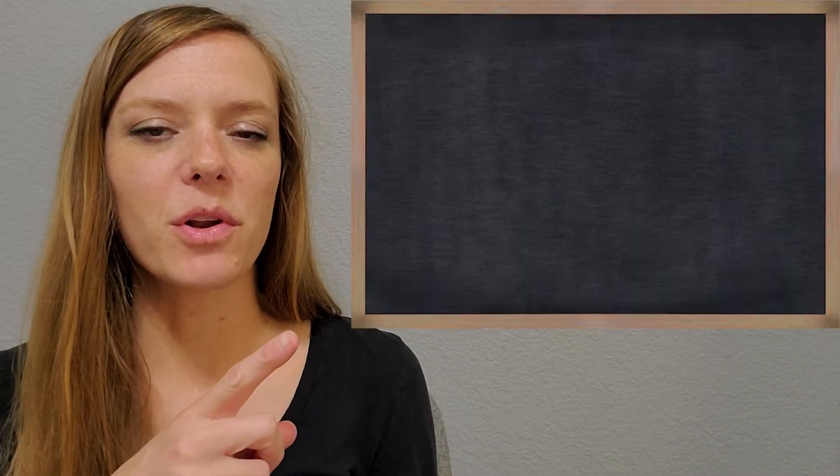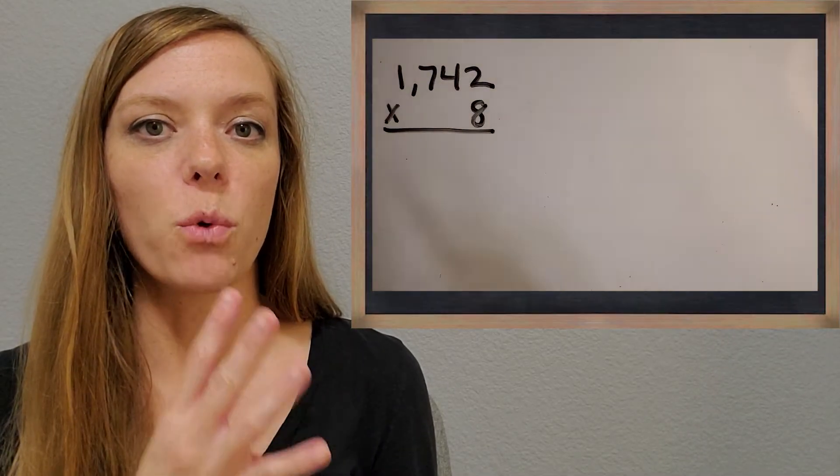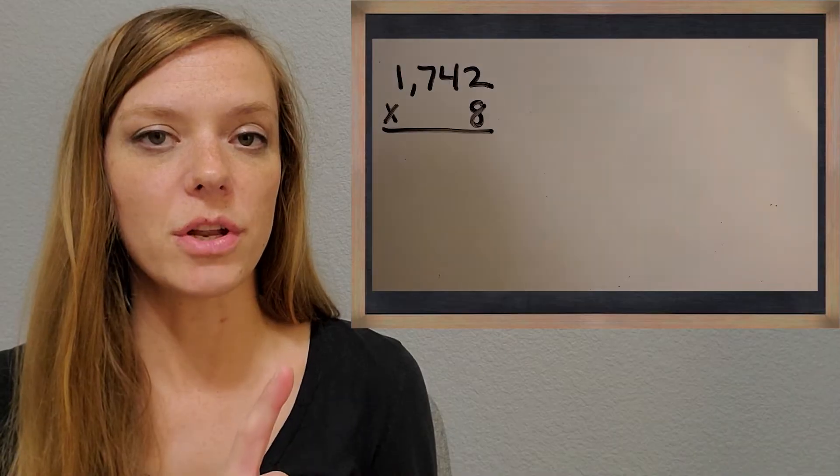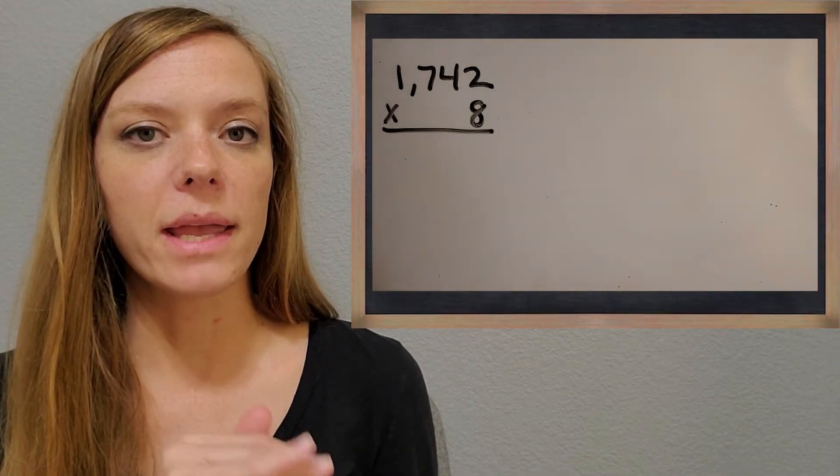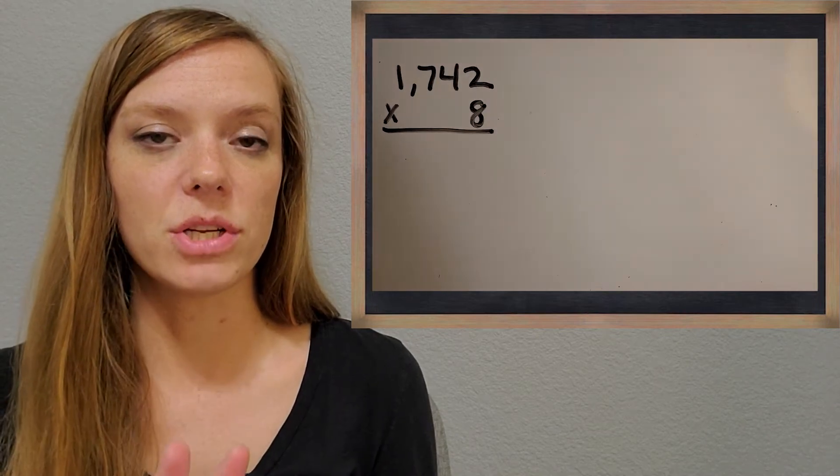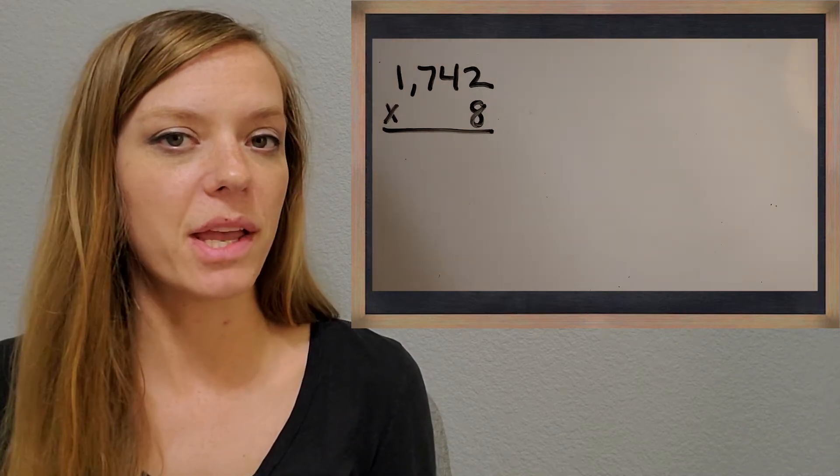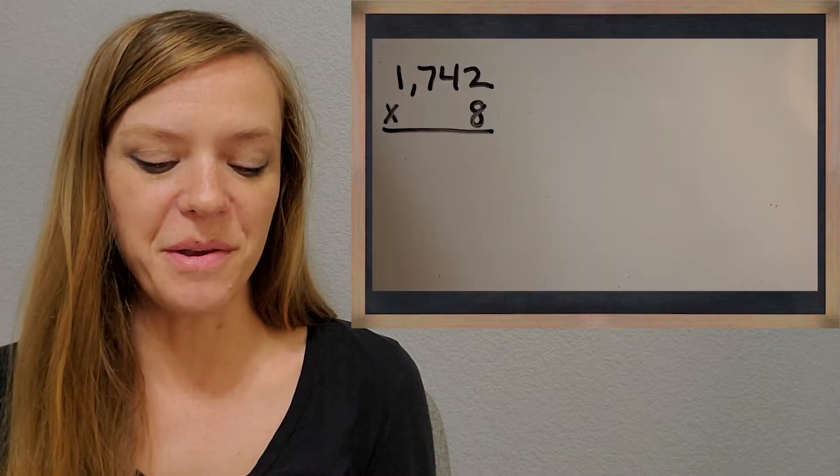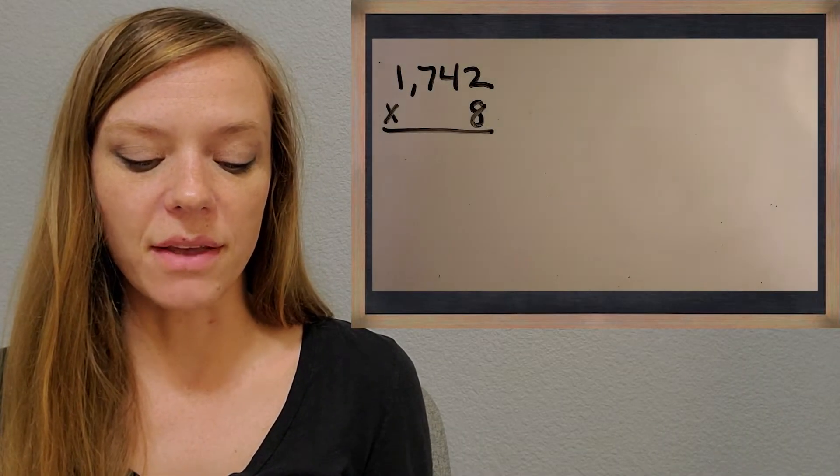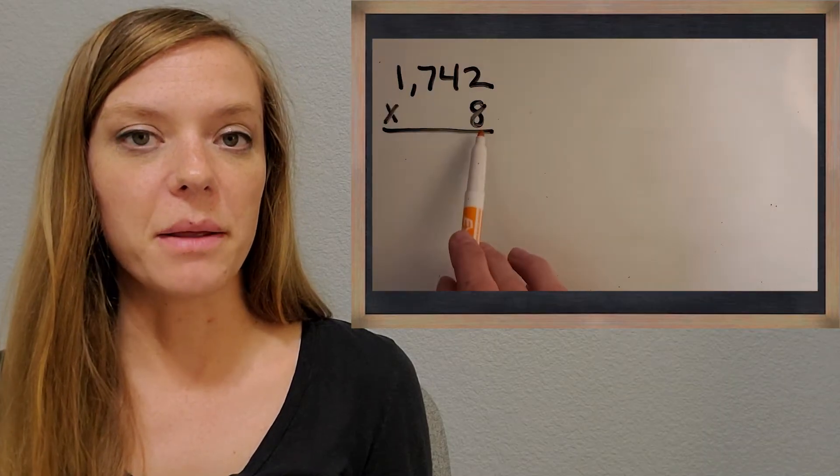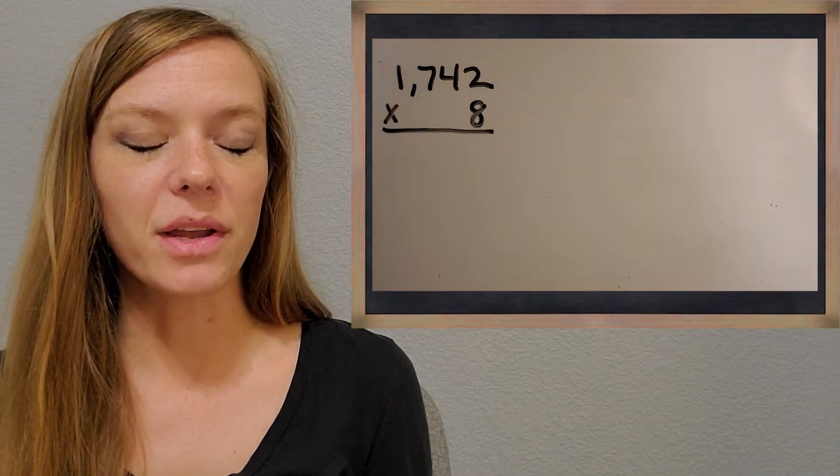Alright, so the first problem we're going to work on is a four-digit number times a one-digit number. I like to kind of start easy before I get up to the two by two-digit numbers. Those are a little more complicated, so let's start with this one, and I'd like to try 1,742 times 8. So let's work it out together.